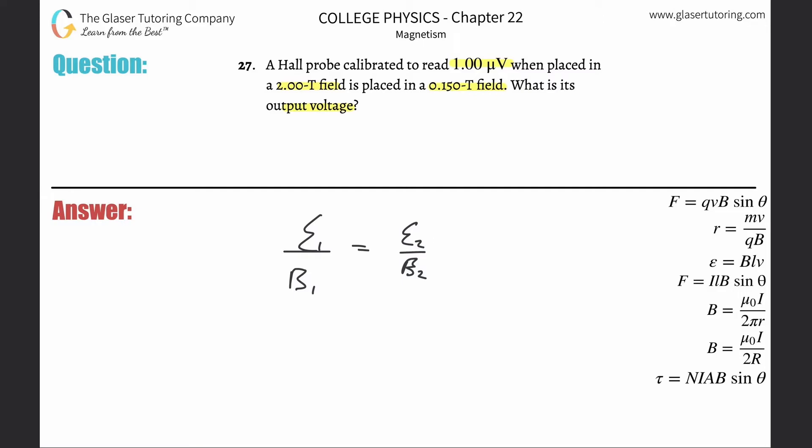Remember we're solving for E₂, the Hall output voltage. Cross multiply the B up—look at how nice and beautiful this works out to be. All I need to do now is plug in the values. B₂, the second magnetic field, is 0.15 Tesla.